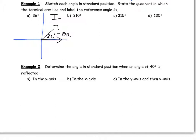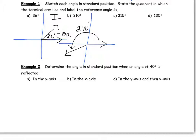For example B, we draw an angle of 210 degrees in standard position. Since it's bigger than 180 degrees, it terminates in quadrant three. The reference angle is the small angle between the negative x-axis and the terminal arm, which has a value of 210 minus 180, so theta r equals 30 degrees.